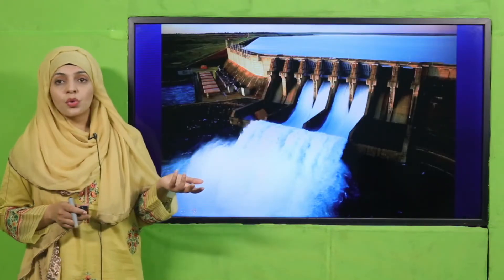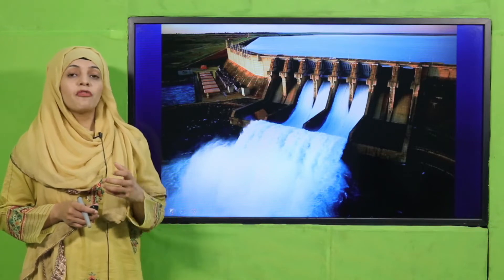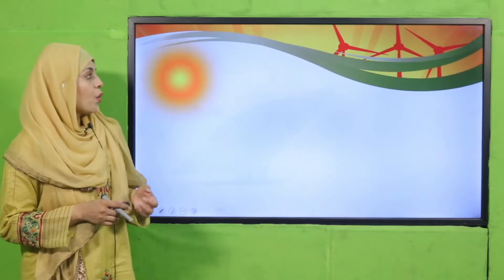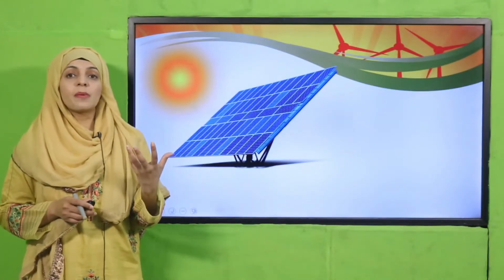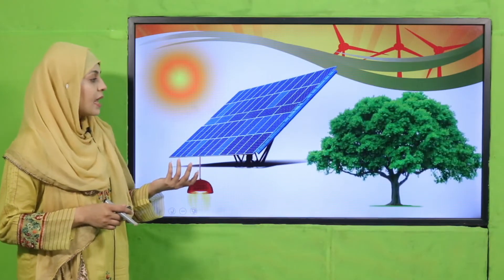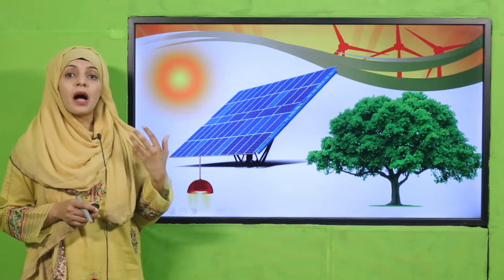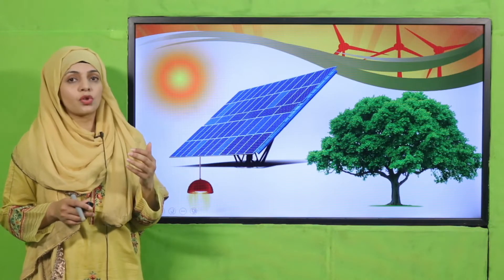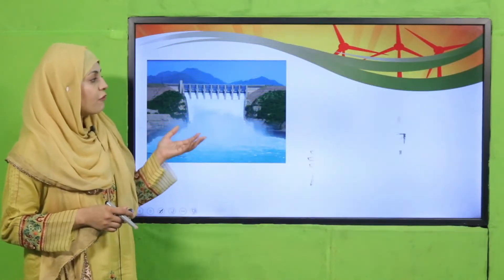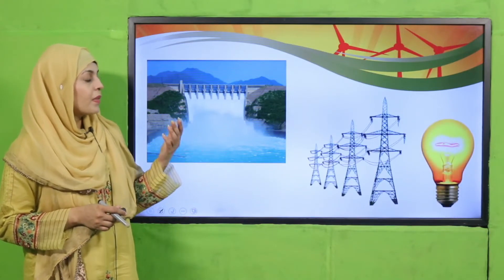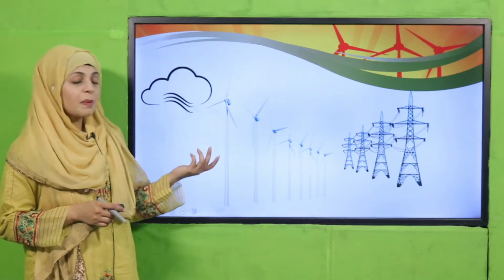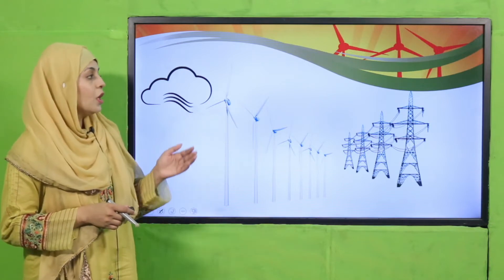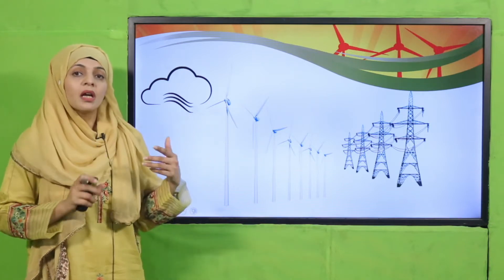Water is also a source of energy — electricity is produced from flowing water because flowing water has energy within it. Sun's energy is used to produce electricity using solar cells, and plants prepare their food in the presence of sunlight. Sun is the greatest source of energy on earth. Flowing water and wind also produce electricity, which means energy can be converted from one form to another.